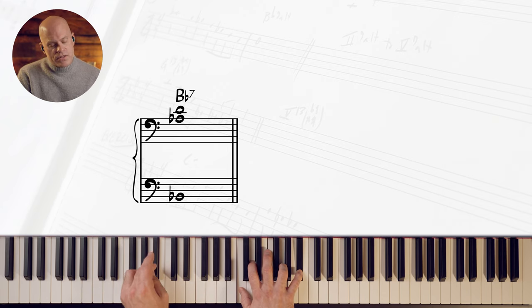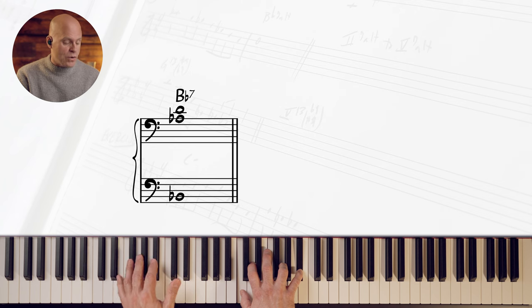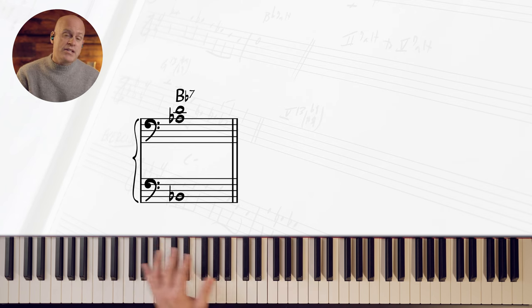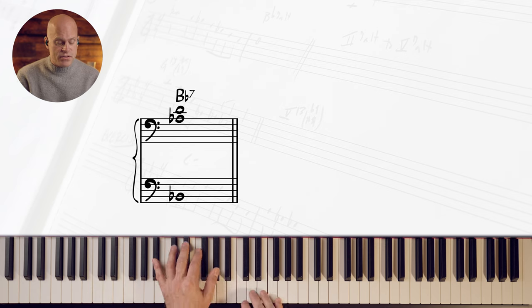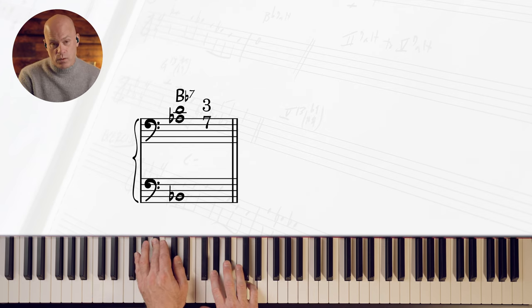Tritone substitution just means that on the five chord, you can play the dominant chord a tritone away from that five chord because they share the same third and seventh. So B flat seven has A flat and D.